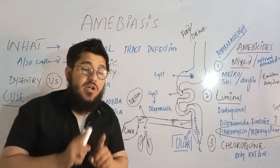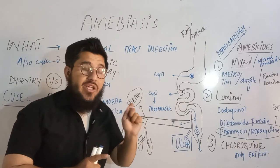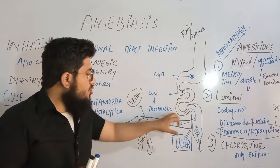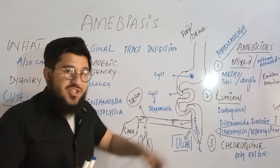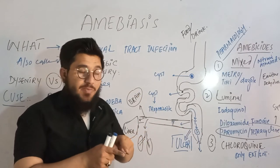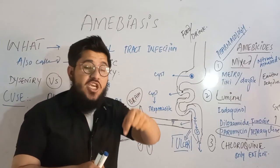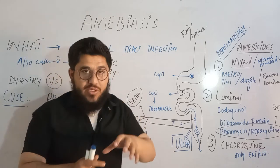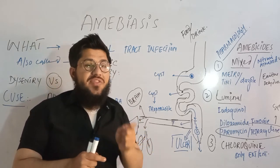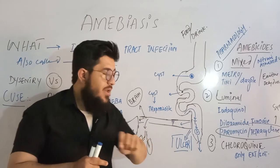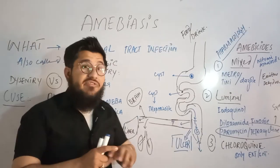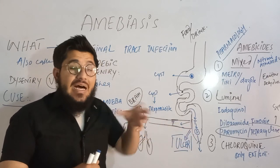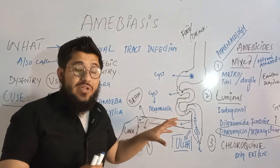These trophozoites are responsible for causing damage to the intestine. When they reach the intestine and cause infection, the infected person, when passing stools, will find mucus and blood in the stool. In the initial stages, there will only be mucus. If the condition worsens, then blood will also be present. A time comes when it causes further damage to the intestine, and in that condition, ulcers are seen.